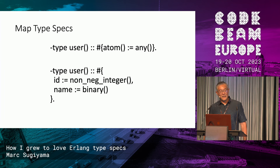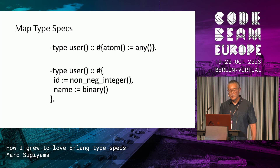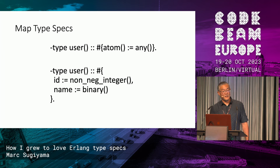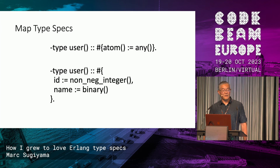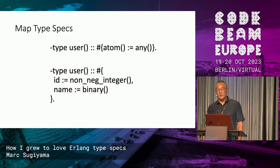You can also provide very specific typing for maps, which is kind of nice because you can specify exactly what all the keys are. This is a great way of documenting what the contents of the map should be, and Dialyzer is actually pretty good at saying this key isn't in here, so something is wrong. We use this to great effect at a previous company on certain data structures.